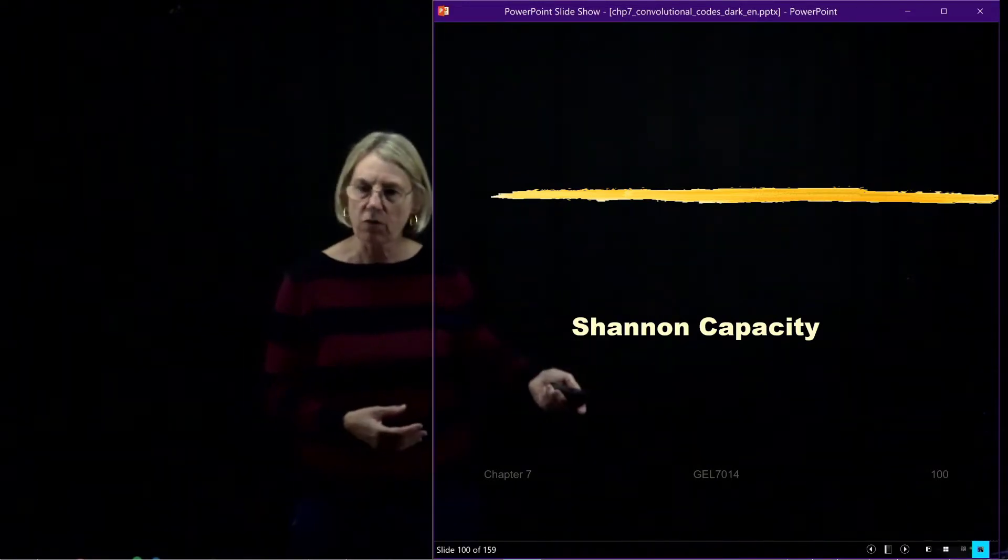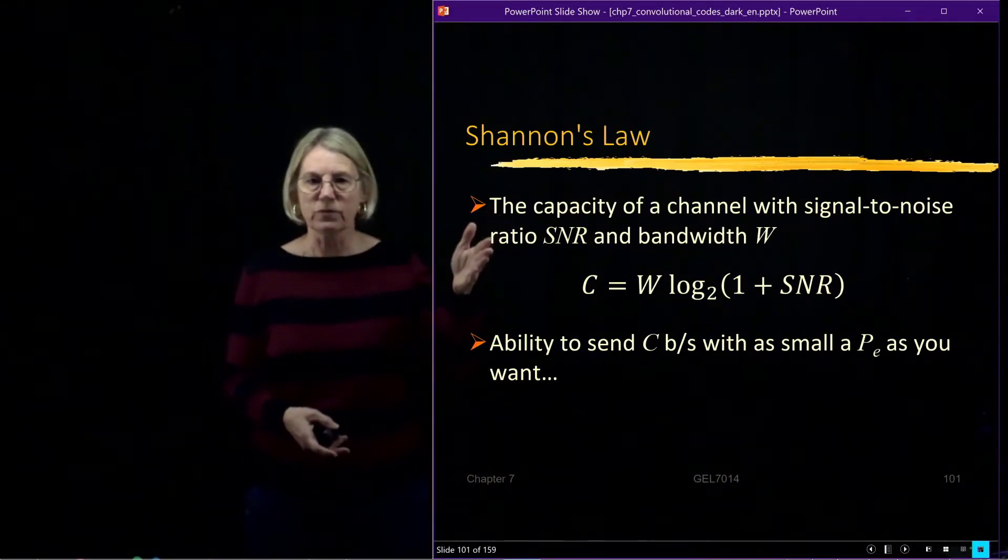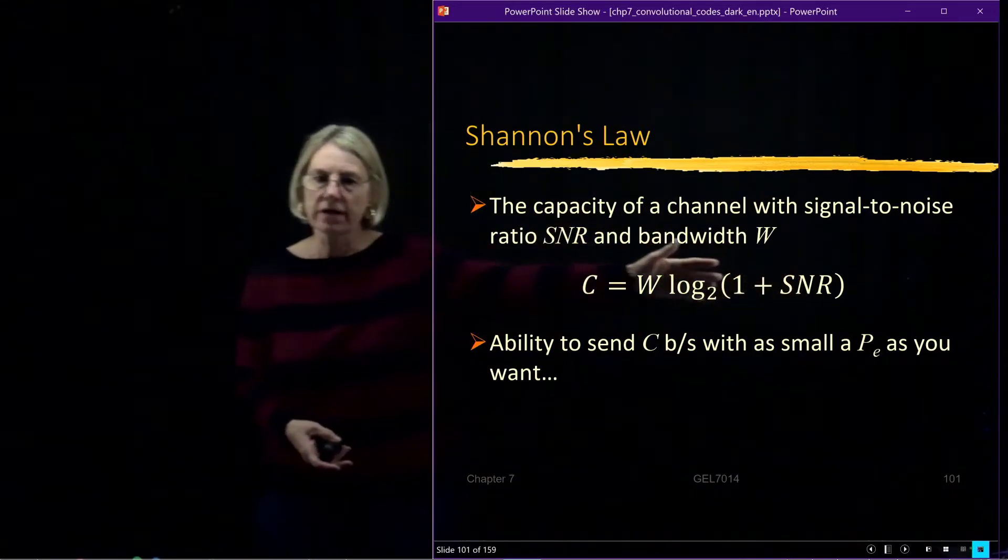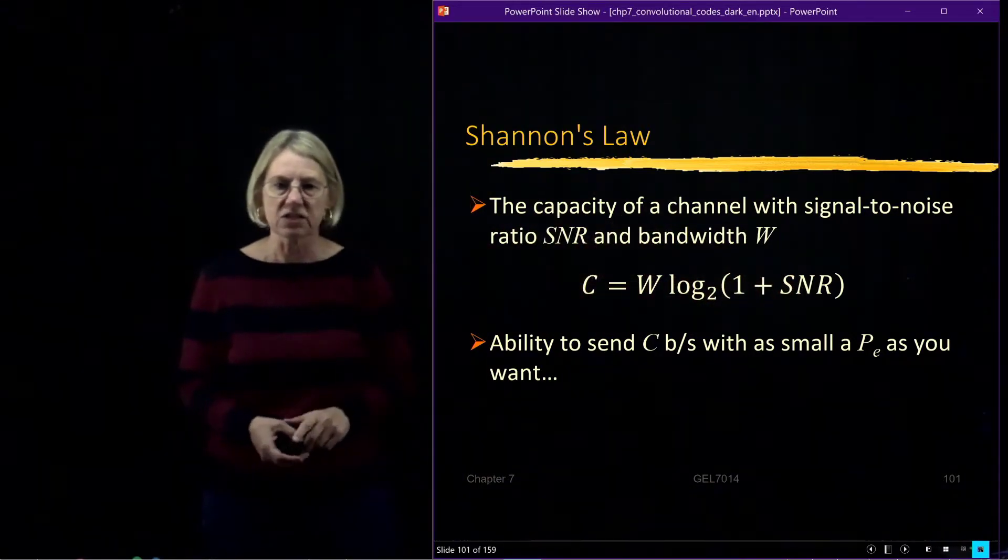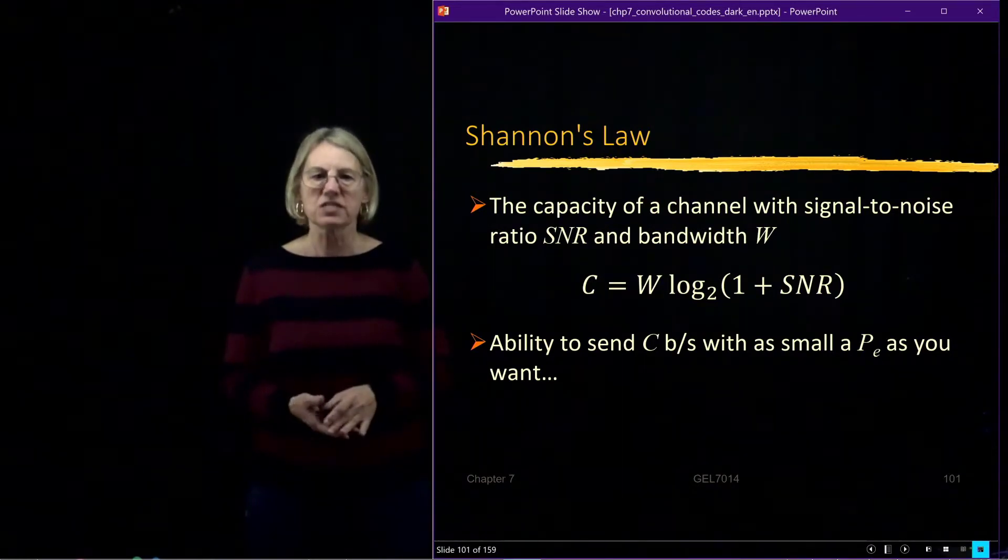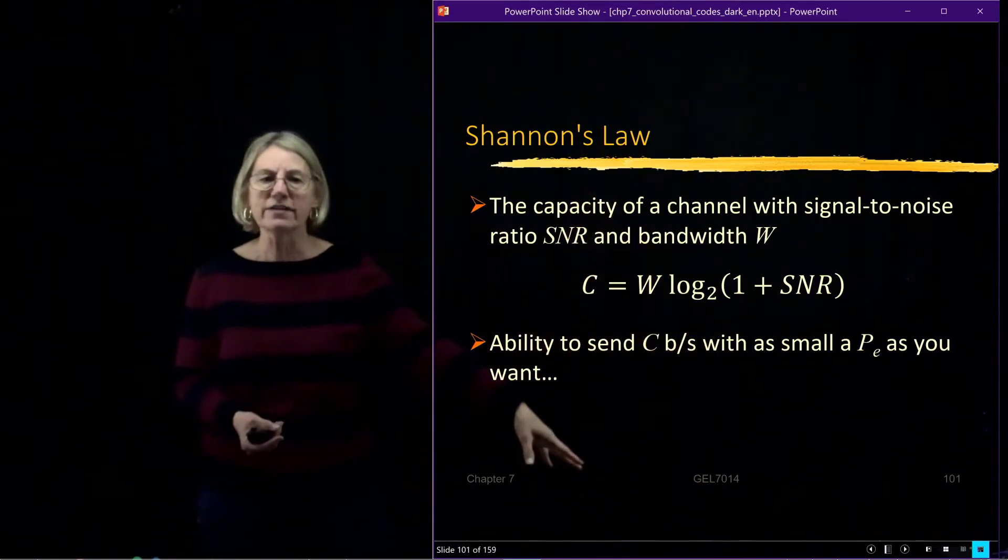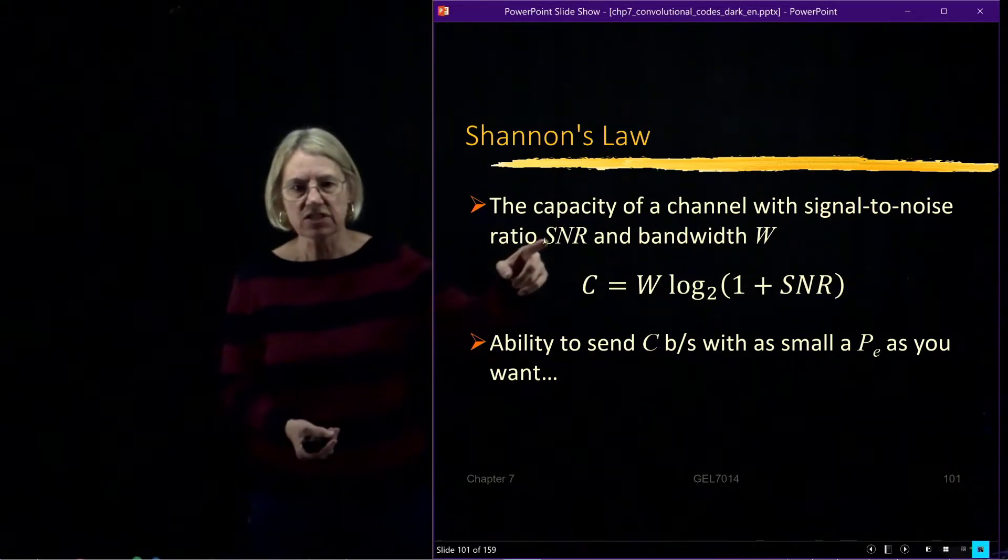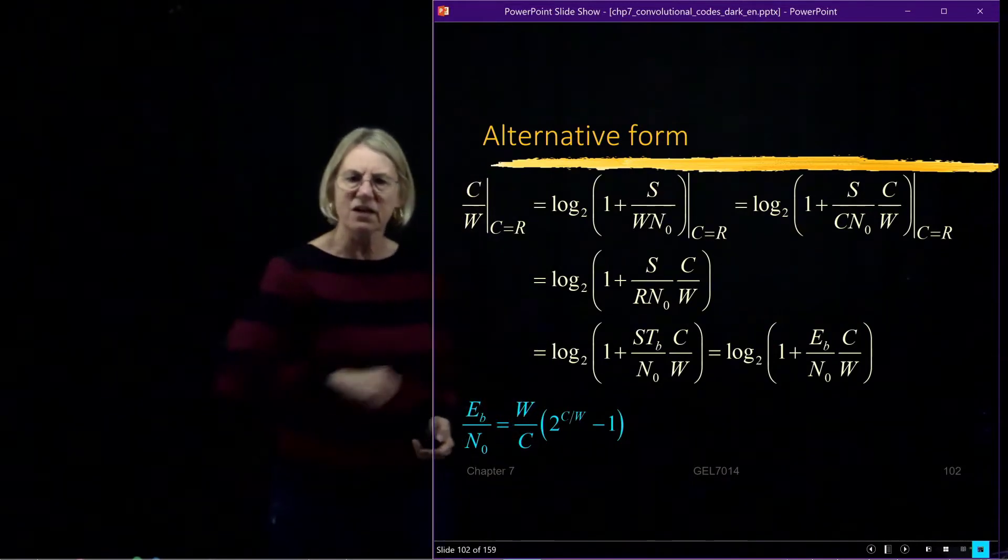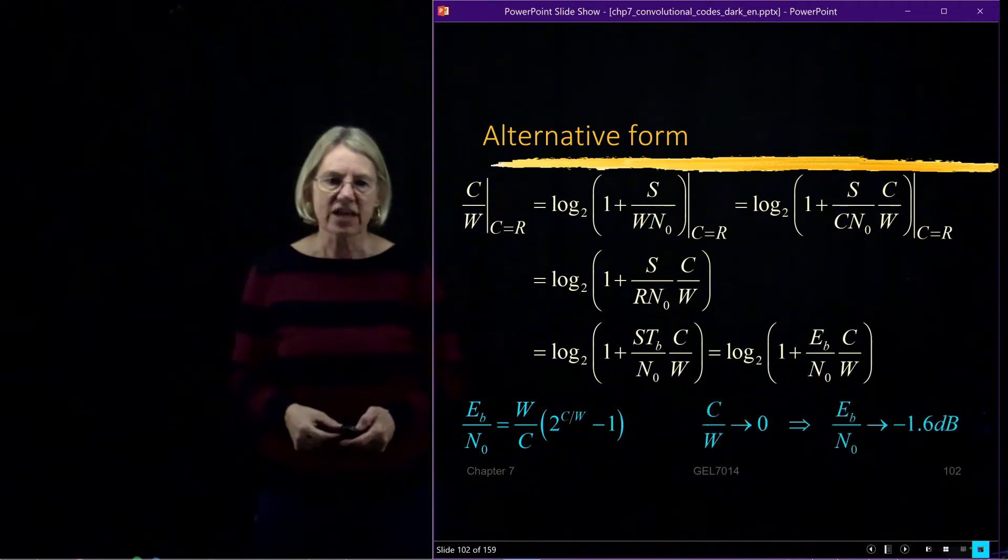Let's quickly return to the idea of Shannon capacity. Shannon's law says the capacity of a channel with a certain signal-to-noise ratio and a certain bandwidth can be given by this very simple expression, and this is for an additive white Gaussian noise channel. We went through all the equations, an equivalent way of writing that simple expression for Shannon's limit.